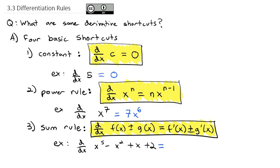We just take the derivatives of the individual pieces. The power rule says we move the exponent out front and subtract one. So we get 5x to the fourth, minus — bring the two out front, subtract one from the exponent — 2x to the first, plus: with x, that's really x to the first, so we pull the one out front and drop the exponent by one. X to the zero is just one. And the derivative of two, a constant, is just zero. So all that we're left with is 5x to the fourth minus 2x plus one.